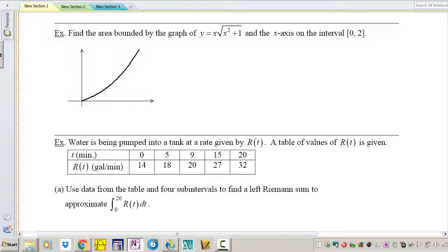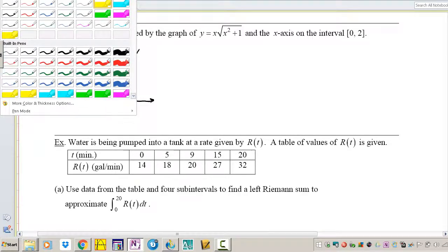Find the area bounded by the graph of x times square root of x squared plus 1 and the x-axis from 0 to 2. From 0 to where I think 2 is, I'm just gonna guess it, here's 2 and I want to find the area from here to there including this part. There is my area.